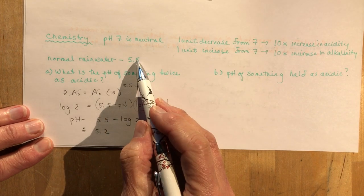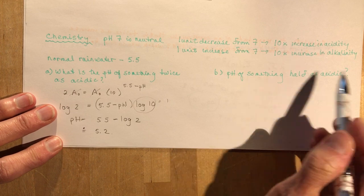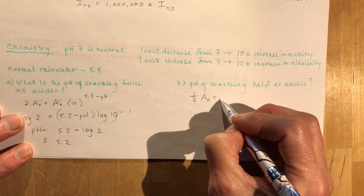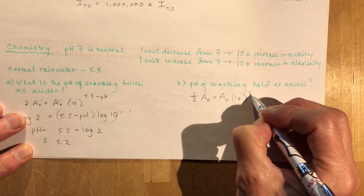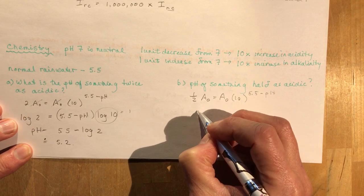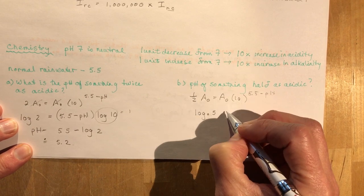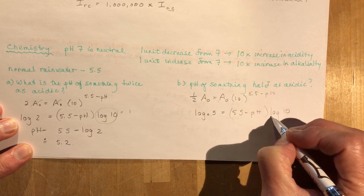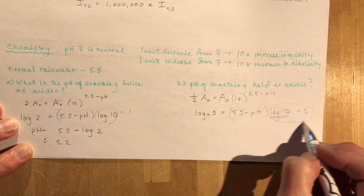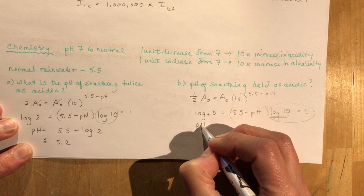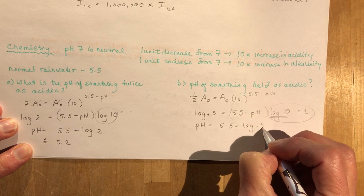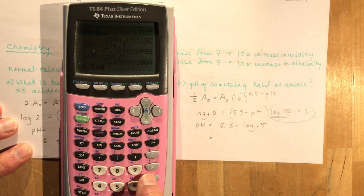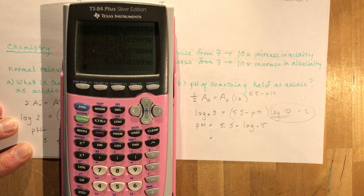So twice as acidic means it went down by 0.3. What would be the pH of something half as acidic? It's going to be the same formula, only on this side we're going to have a half. We're still measuring it compared to something else. This time we're going to be taking the log of 0.5, which is a half, is 5.5 minus pH times the log of 10. This is 1. To find the pH, the pH is going to be 5.5 minus the log of 0.5, and that's going to give me 5.8.